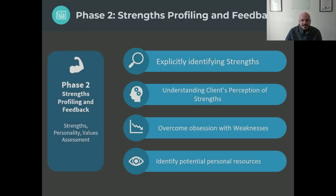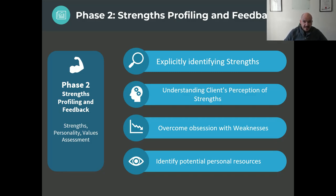The second phase is all about strengths profiling. The purpose of this phase is to explicitly identify the strengths in people — helping them identify what their strengths are, both in a quantitative and qualitative manner: through stories they're telling, as well as through psychometric instruments. We want to get a full overview of a person. We usually assess someone against a capability framework involving strengths, certain competencies, values, experiences, and so on — assessing them against all of these things to have a holistic picture of the client.